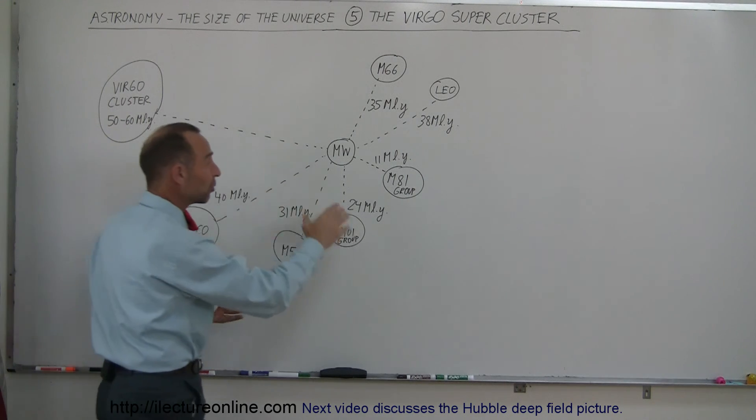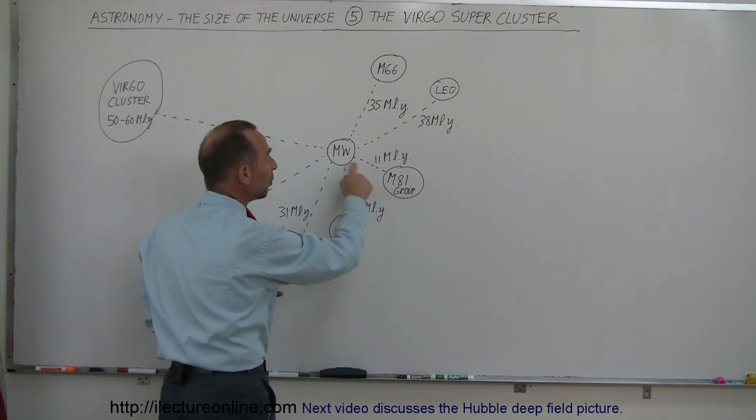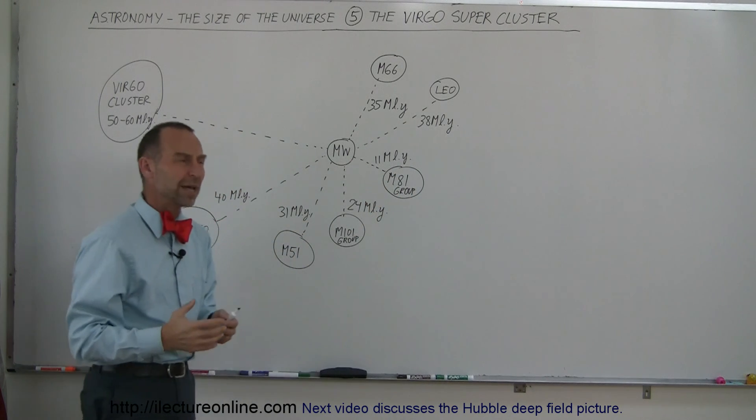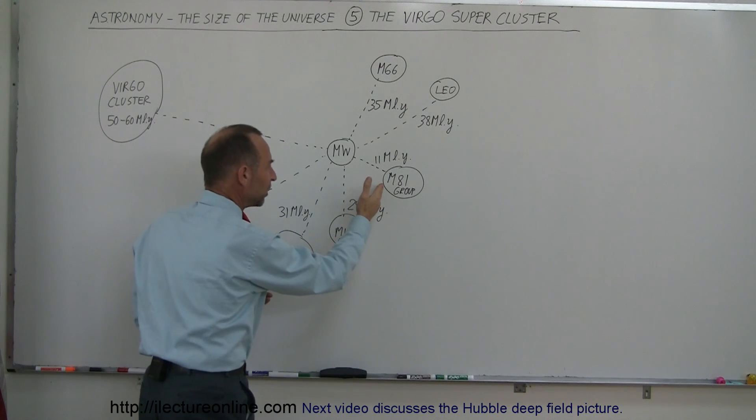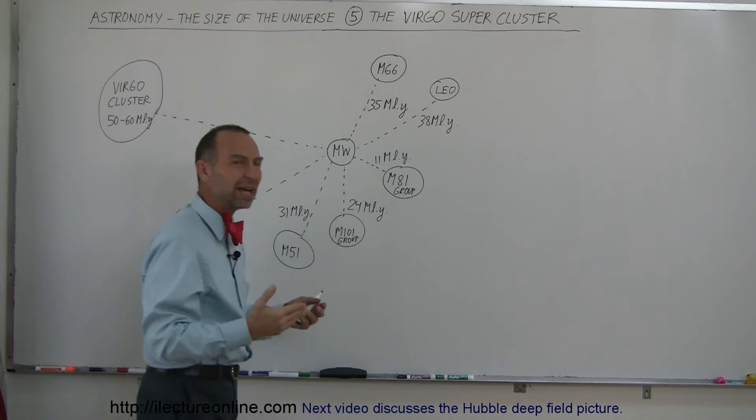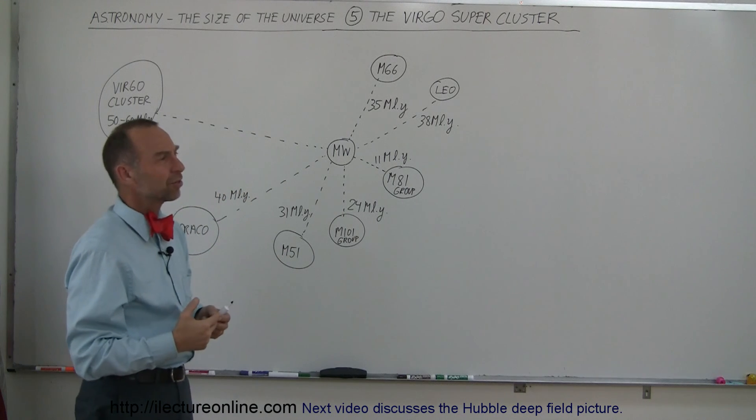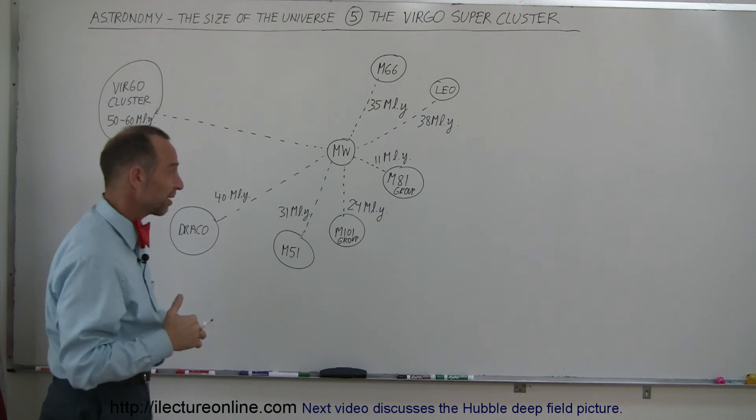So when we look in some directions, we see what we call the M81 group, which is 11 million light-years away. Imagine, 11 million years, the light coming from that group has been traveling for 11 million years to get here. 11 million years at the speed of 186,000 miles per second.